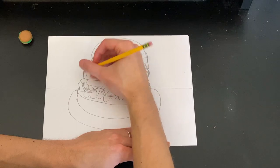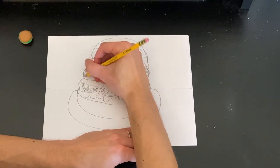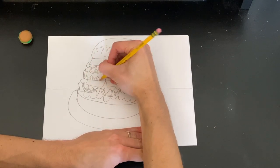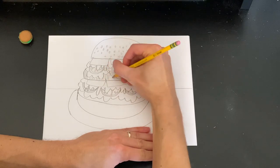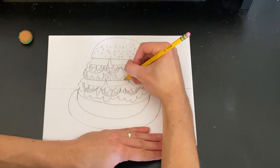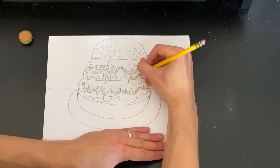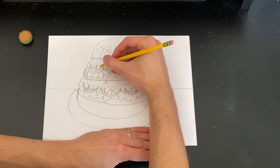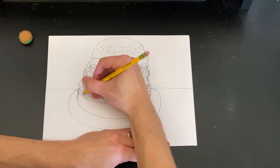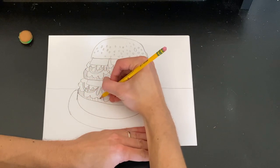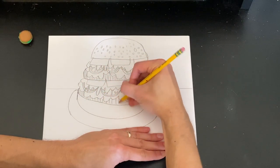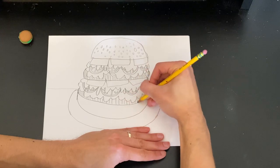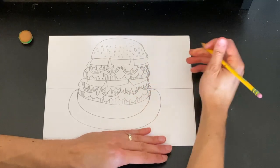For the meat or the patties, we're going to make some lines going up and down. And since it's getting overlapped, meaning that lettuce and the other stuff is on top of the meat, you don't need to draw the lines in the lettuce, just in the parts that are the meat. If you have a ruler, you can make straight up and down lines.